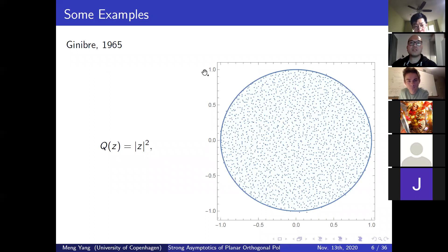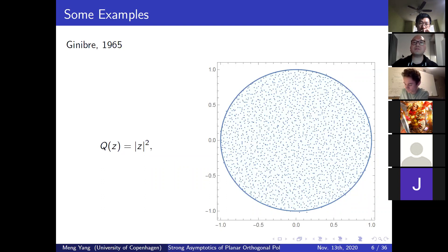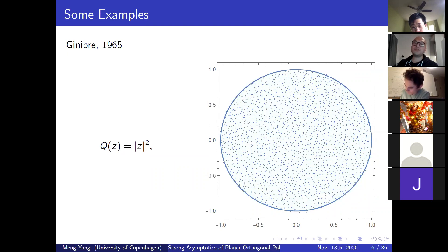Here are several examples. The first is the Ginibre ensemble studied in 1965, where the external potential Q(z) is given by Gaussian weight. For the Ginibre ensemble, almost all particles are confined to the unit disc in the scaling limit — though a finite number of charges remain outside. The corresponding strong asymptotics of the orthogonal polynomial is given by the monomial Z^n, so all zeros are at the origin.